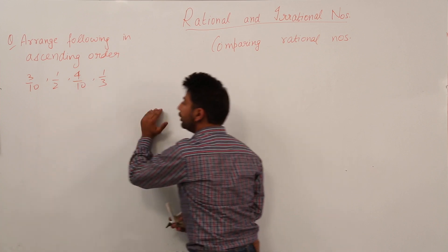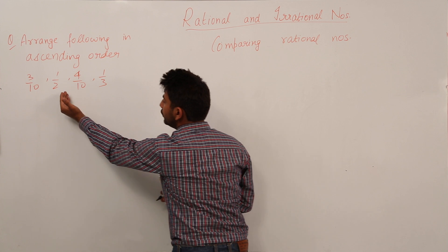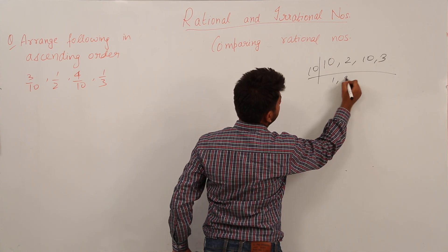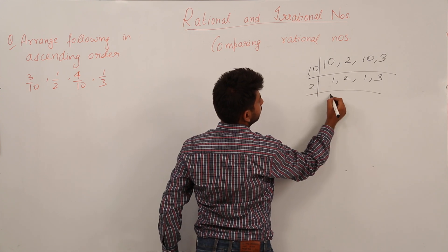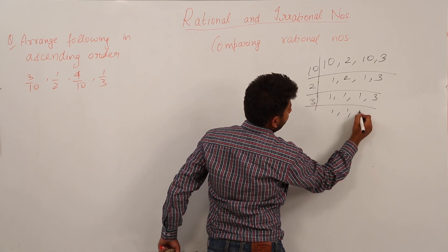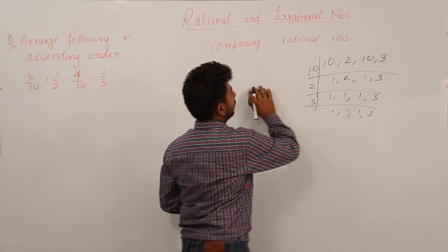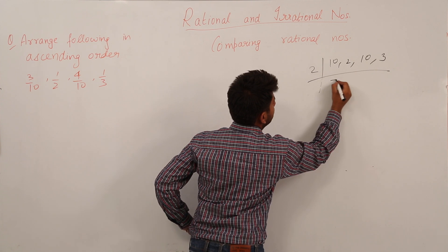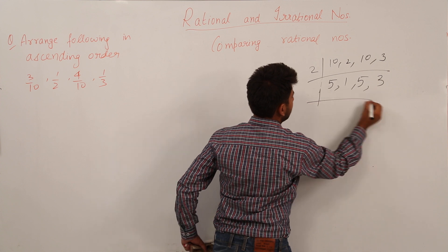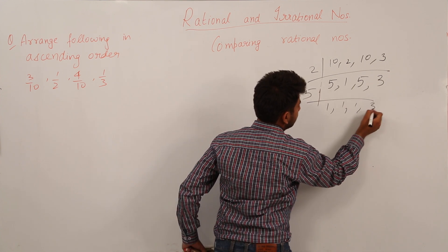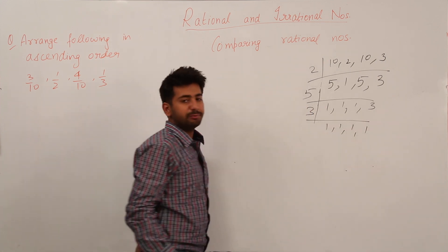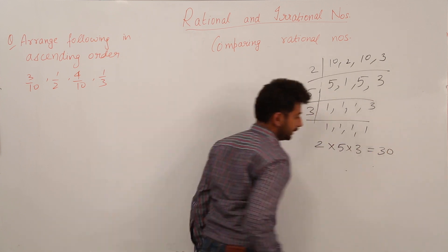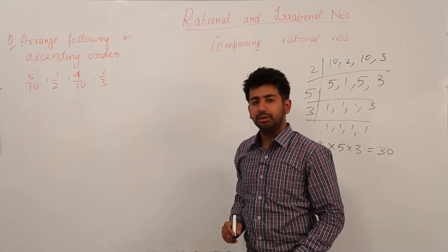So let us first make all the denominators equal by taking the LCM of 10, 2, 10, and 3. Dividing: 2 × 5 × 3 gives us the LCM. 2 × 5 = 10, and 10 × 3 = 30. So the LCM of these four denominators is equal to 30. We need to make all denominators equal to 30 and then compare the numerators.